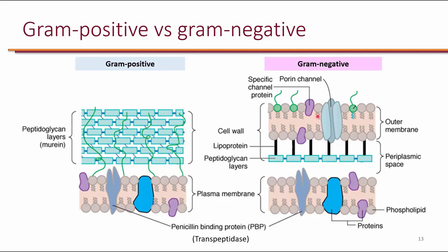Aminoglycosides are active primarily against gram-negative organisms because they can go through porin channels, traverse the thin peptidoglycan layer, and reach the ribosomes inside the cell. Against gram-positives, aminoglycosides cannot penetrate the thick peptidoglycan layer on their own. However, we can use aminoglycosides for synergy with other antibiotics that are active against the cell wall. If those antibiotics break down the peptidoglycan layer, then aminoglycosides can enter the cell and exert a synergistic effect.